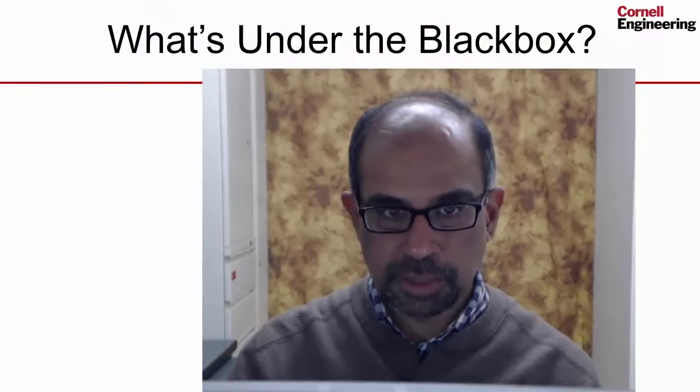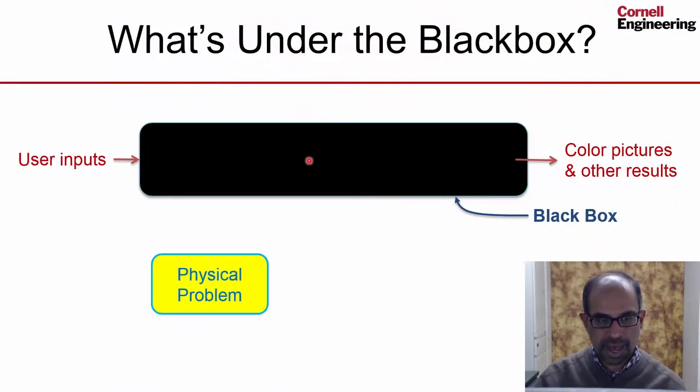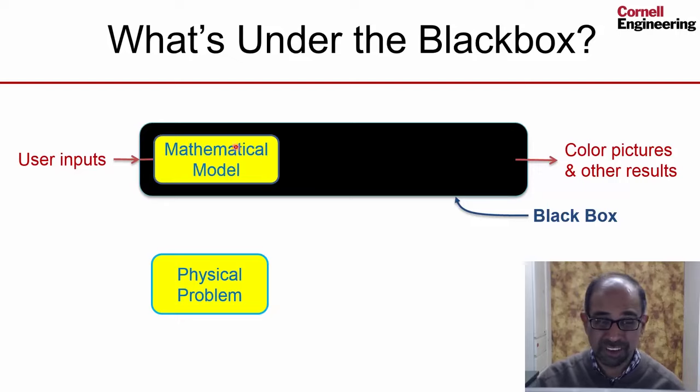Let's think through what's under the black box. So we have a black box and we have our physical problem. We are determining what the user inputs are, geometry and so on, based on the physical problem and the tool uses these user inputs to figure out what is a mathematical model to be solved.